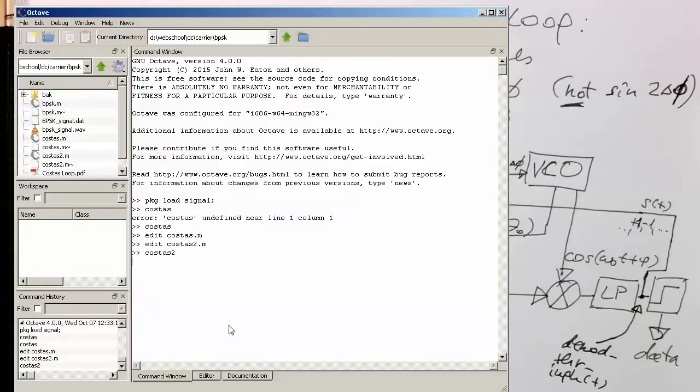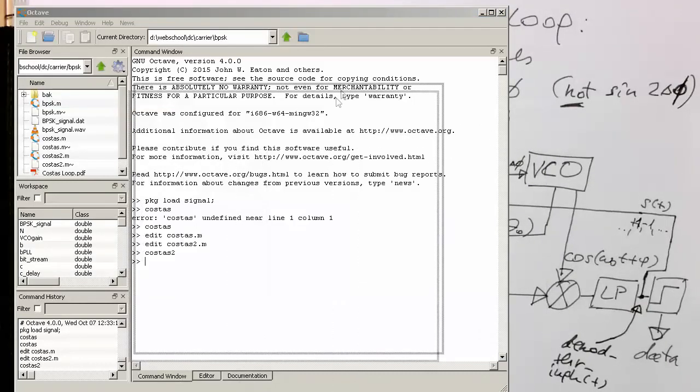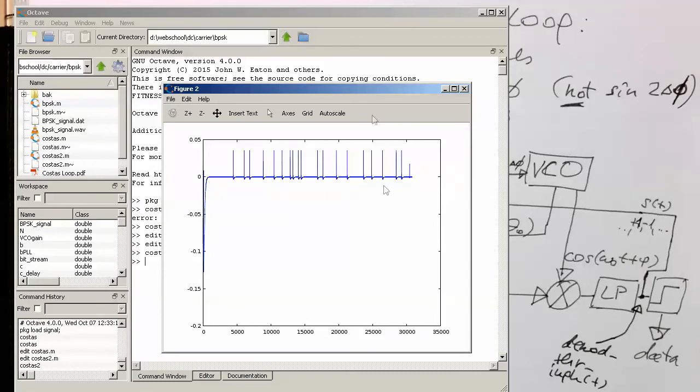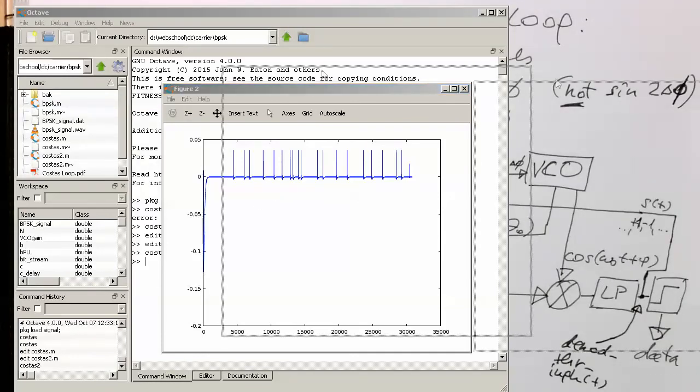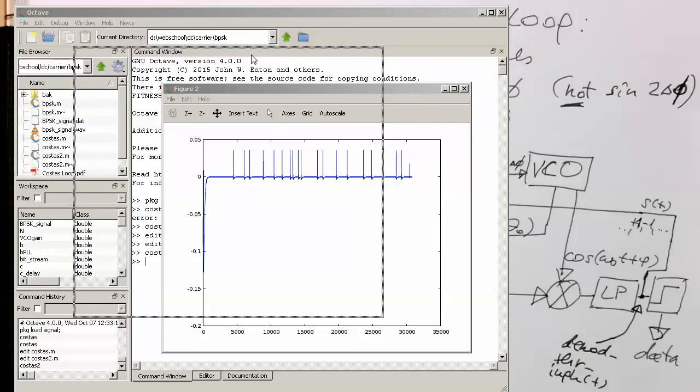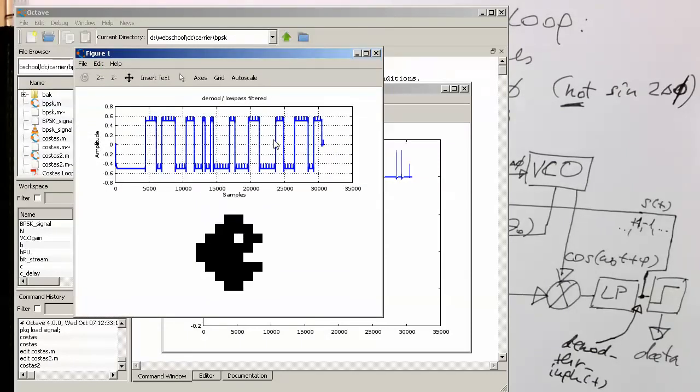So let's just have a look when we run COSTAS 2 now, this improved Costas loop, and have a look at the VCO voltage. We see there these tiny spikes because obviously the low pass filter takes a moment to decode the symbol. So we're getting small deviations from the VCO voltage. But these small deviations, they won't harm the decoding of our PACMAN. So let's have a look where the PACMAN is. And the PACMAN still looks absolutely fine. We see with the simplified version it works.